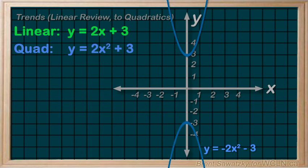So the general trends are very similar between linear and quadratic graphs. If we keep this in mind as we work through all the different aspects, we'll find them easier to remember.